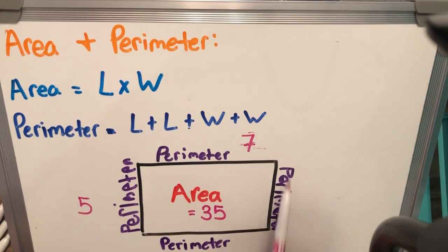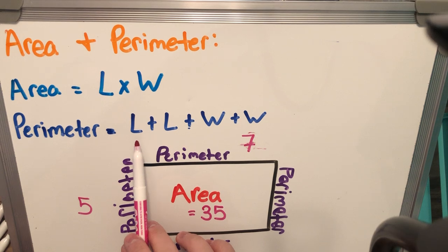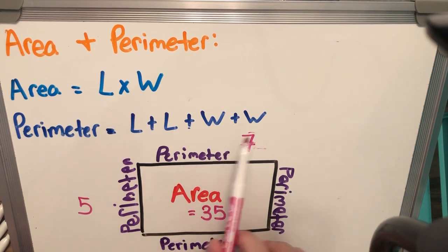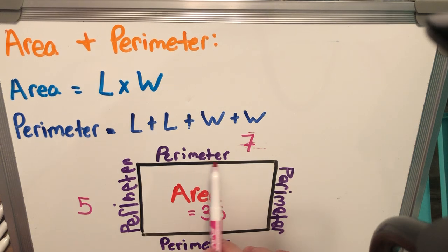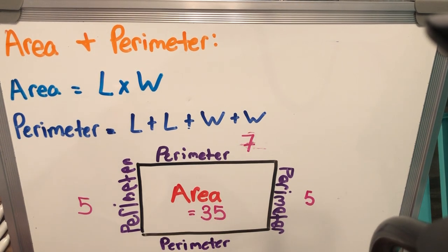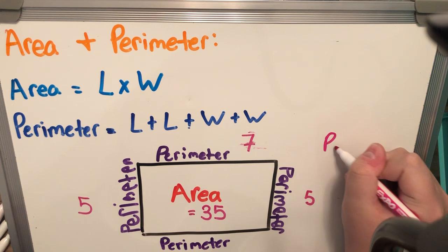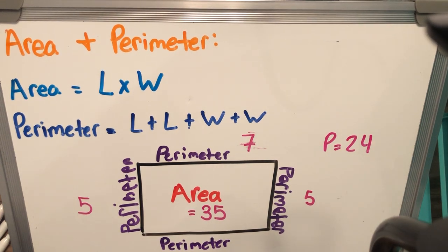Now to find perimeter — perimeter is the entire outside of the shape — we are adding all four sides. So we're adding the two lengths plus the two widths. I would add five, another five, and then seven and seven. Five plus five is ten, and seven plus seven is fourteen, so ten plus fourteen gives me a perimeter of twenty-four. That's a quick standard view of how to solve for area and perimeter.